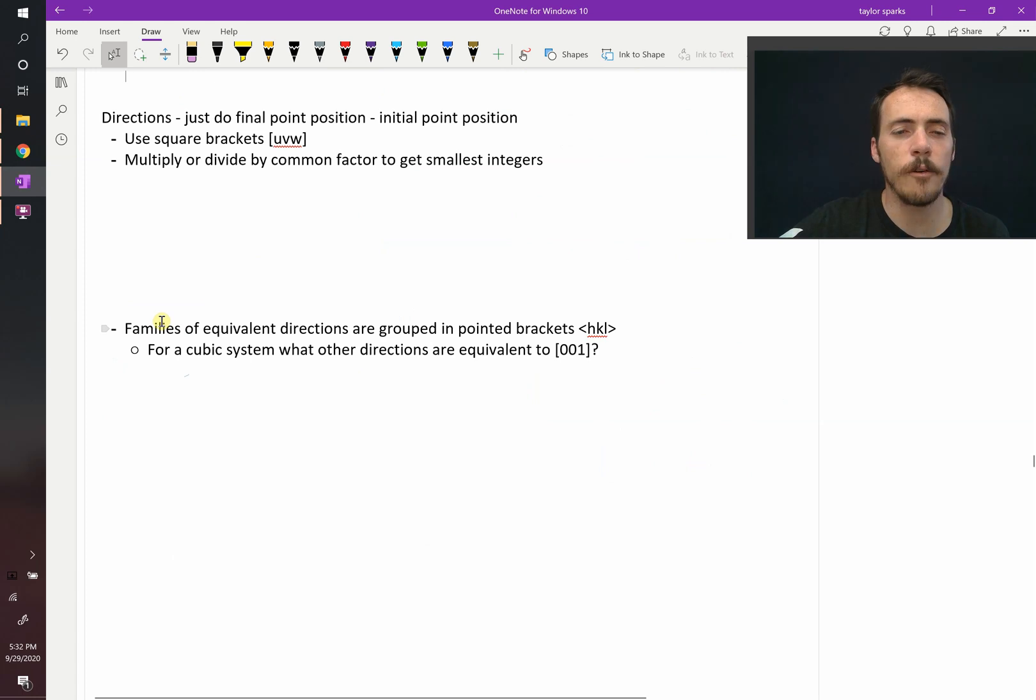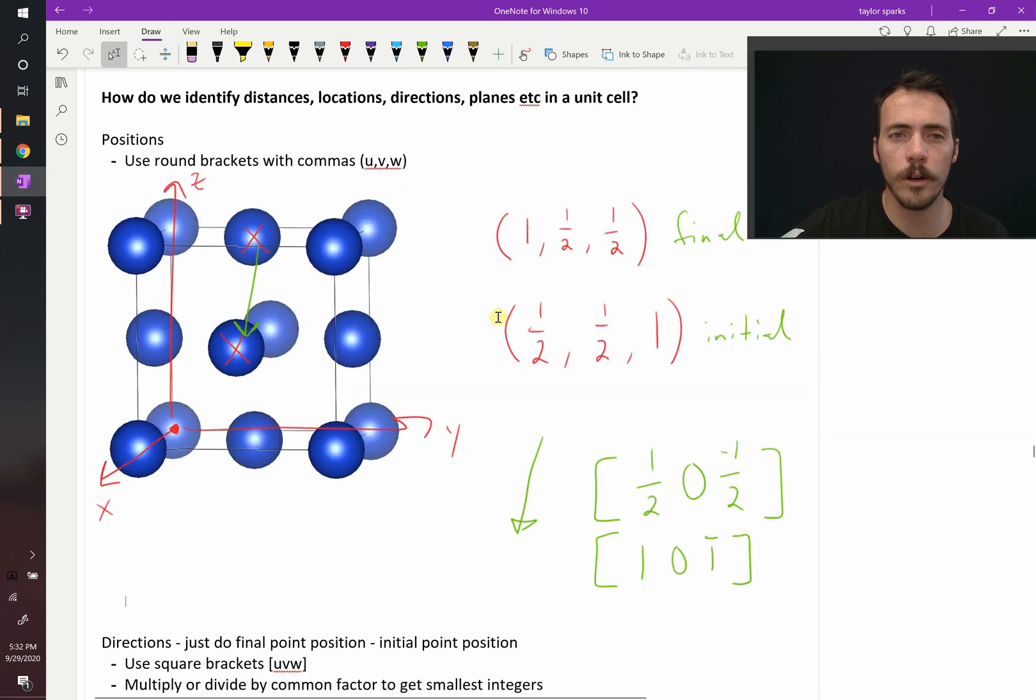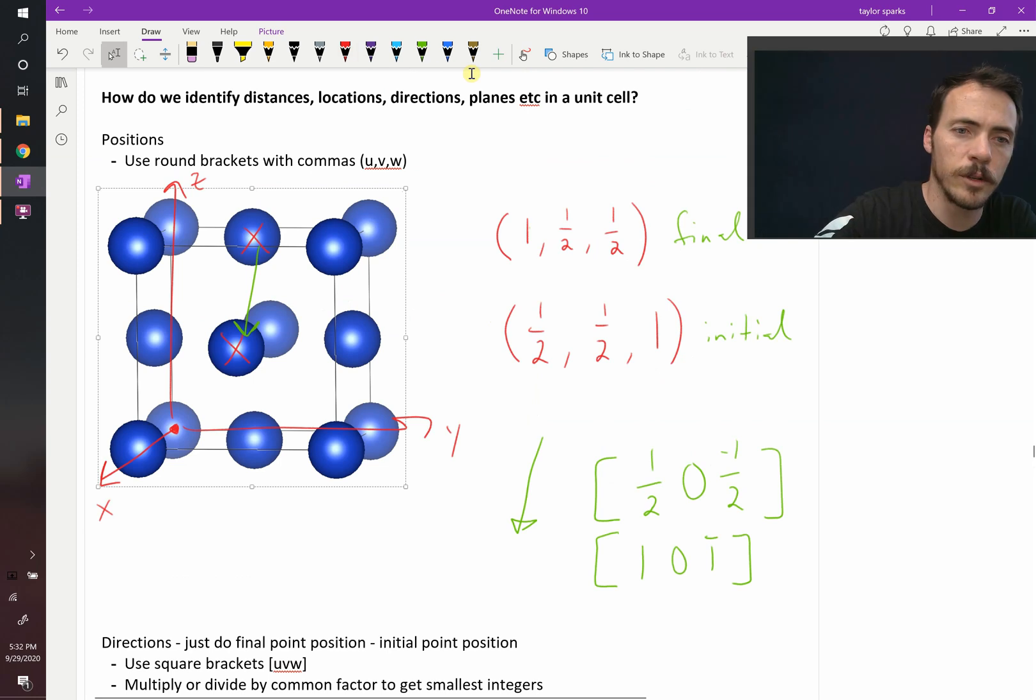Now, what about this? What about families of equivalent directions that are grouped? So if we want to talk about not just one direction, but all directions in the crystal that are crystallographically identical. So, for example, in this drawing here, what things are identical? How about this one?